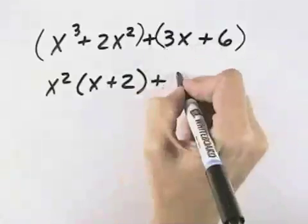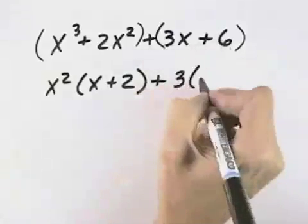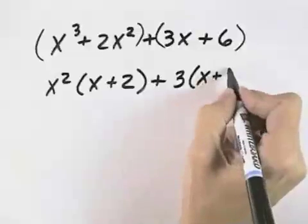Now in my second grouping, I have a common factor of 3. So if I pull the 3 out, I'm left with x in the first term, and dividing 6 by 3 gives me 2.